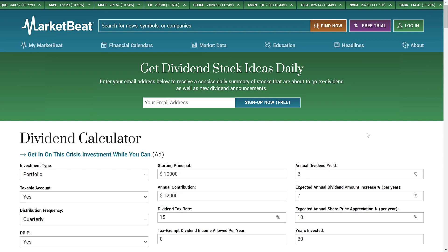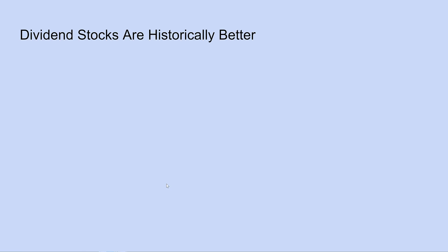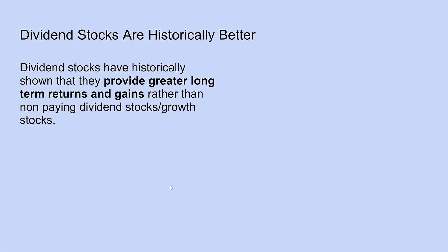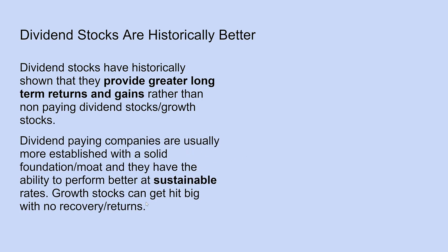Let me explain why dividend stocks are historically better. A lot of people look at dividend stocks and ask why they'd accept two or three percent in dividends when they could get incredible gains from options trades. The honest truth is those options trades require a lot of time and consistency, while dividends are completely passive. Over the long term, dividend stocks have historically provided greater returns than non-dividend-paying growth stocks. These dividend-paying companies are usually more established with a strong foundation and moat, and they perform at better, sustainable rates.